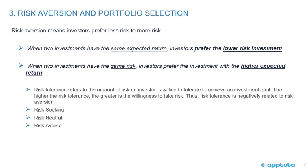Risk aversion means investors prefer less risk to more risk. When two investments have the same expected return, investors prefer the lower risk investment. When two investments have the same risk, investors prefer the investment with the higher expected return.